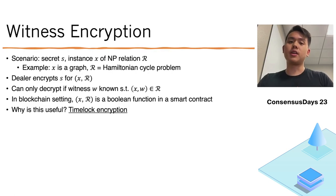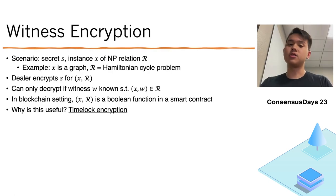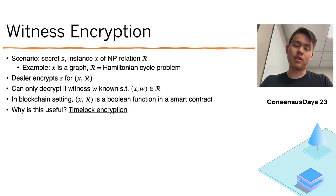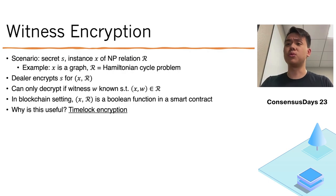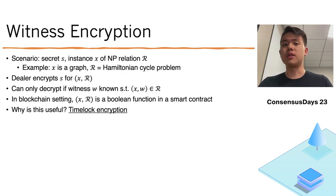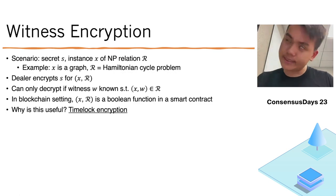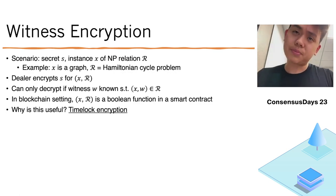In the blockchain setting, this instance-relation pair is nothing more than a Boolean function in a smart contract. This kind of encryption is useful to instantiate other constructions, such as timelock encryption.